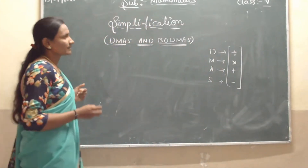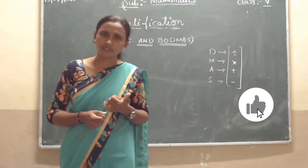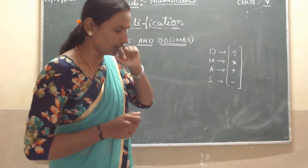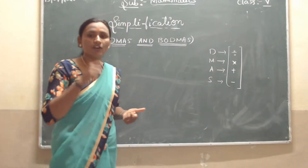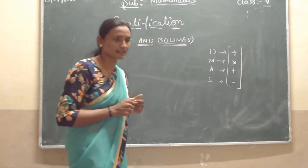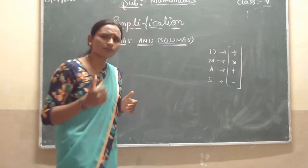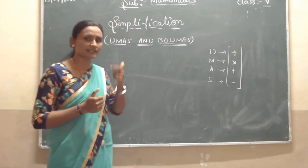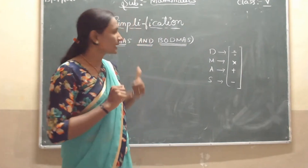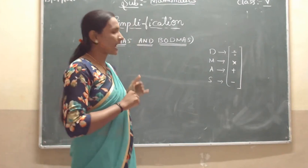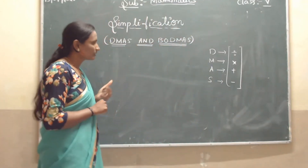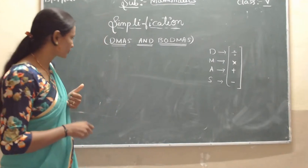Next is BODMAS. What is the rule of BODMAS? BODMAS is the order of operations. The BODMAS name itself indicates the rule. BODMAS is a six-letter word. What is the full form of BODMAS? B for Brackets, O for Order or Of, D for Division, M for Multiplication, A for Addition, and finally S for Subtraction. Now I will write the full form of BODMAS.